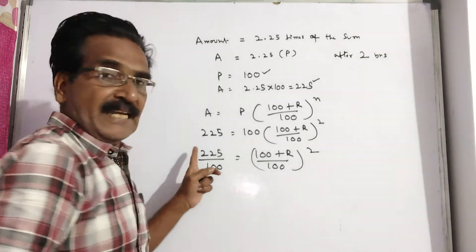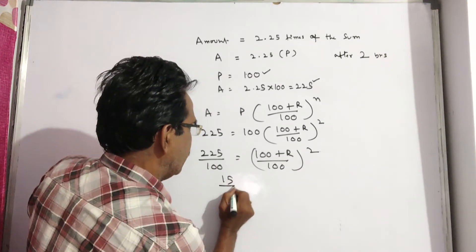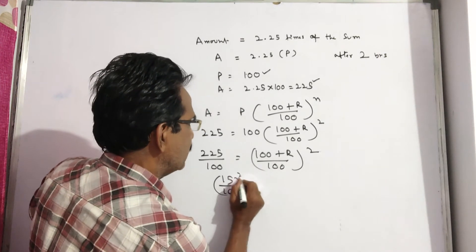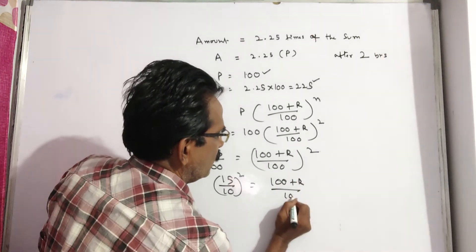Let us say LHS is equal to (15 by 10) whole square. So (15 by 10) whole square equals (100 plus R by 100) whole square.